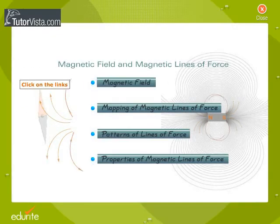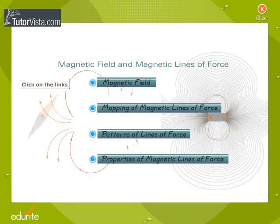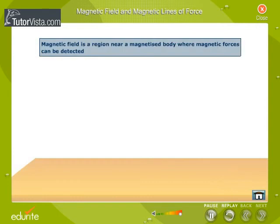Magnetic Field and Magnetic Lines of Force. A magnetic field is a region near a magnetized body where magnetic forces can be detected.